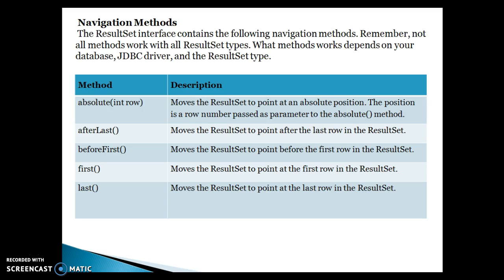The first method I would like to talk about is absolute. It takes a row number. Now, absolute always takes a positive integer value — you cannot supply a negative value. I was a bit confused earlier; that is the relative method. In the relative method you can specify a positive as well as a negative integer. In absolute, you will have to specify a positive integer.